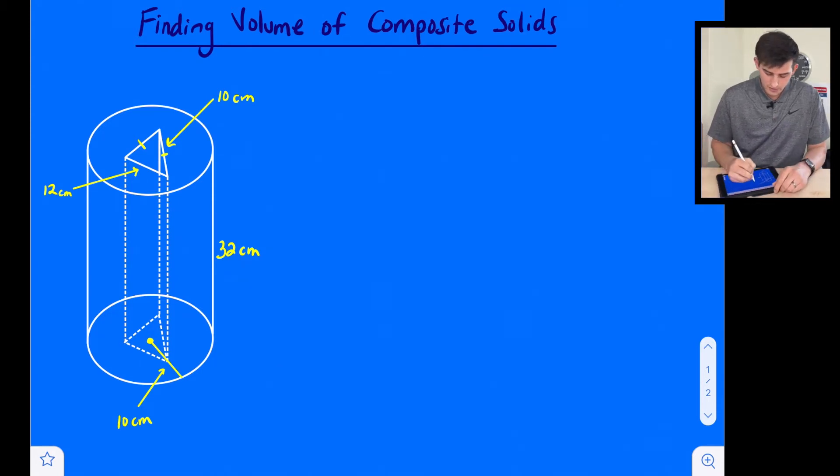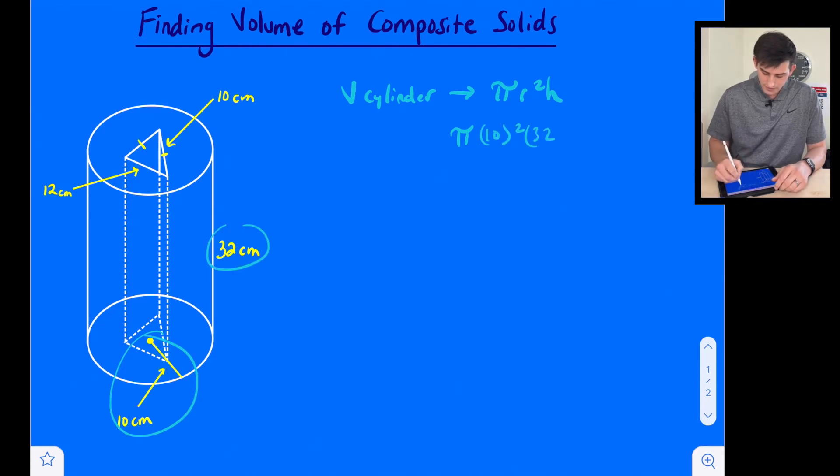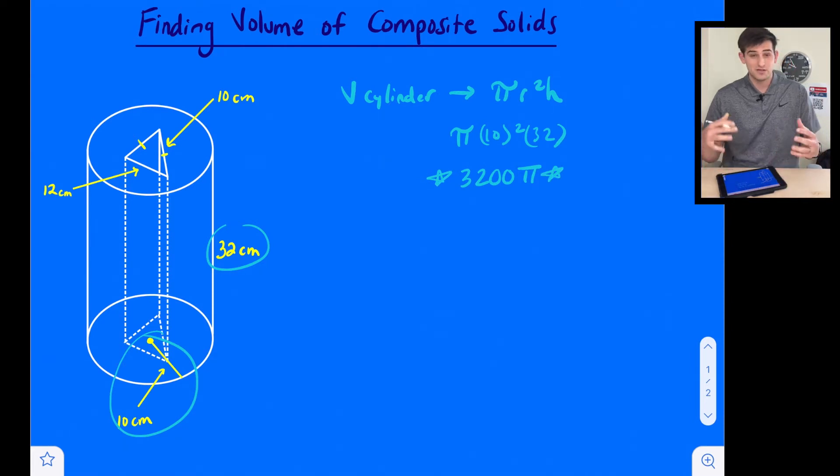If we think about the volume of our cylinder first, our volume of our cylinder is equal to π r² times height. So we can find that we have π, our radius here would be 10, so 10 squared, and our height is 32. So now let's just write this in terms of π, this would be 3200π. That's our volume of the entire cylinder if there was no piece taken out.